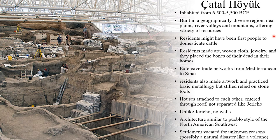The people of Chatalhuyuk used a variety of materials in their artwork, suggesting they had extensive trade routes. They used seashells from the Mediterranean and minerals from the Sinai Peninsula. They also practiced basic metallurgy, but like the residents of Jericho, they still relied primarily on stone tools. Unlike the residents of Jericho, the people of Chatalhuyuk built their homes attached to one another. They would enter their homes through the roof, using ladders. Chatalhuyuk did not possess walls. The architecture of Chatalhuyuk actually bears some similarities to the Pueblo style of architecture used by the indigenous people of the North American Southwest.